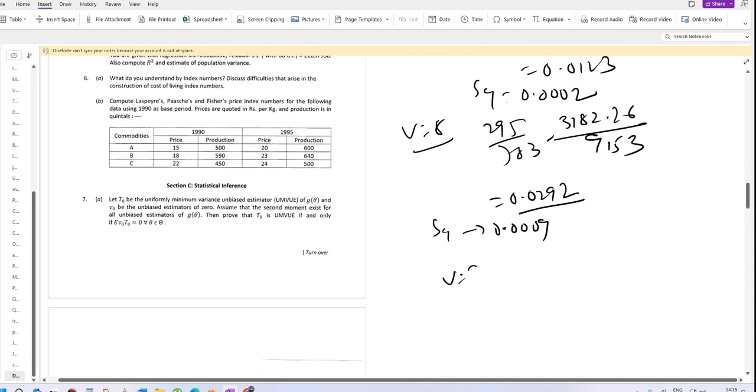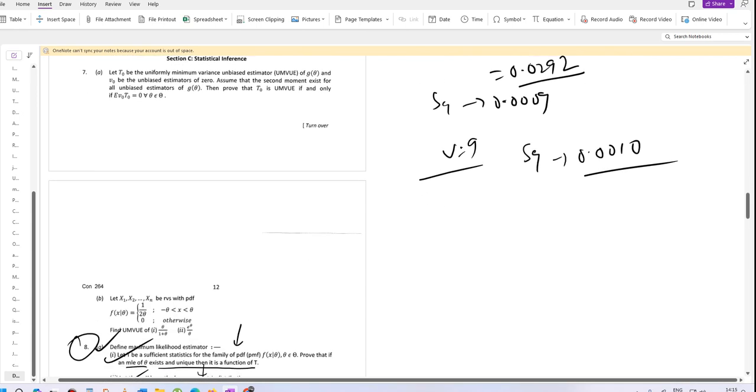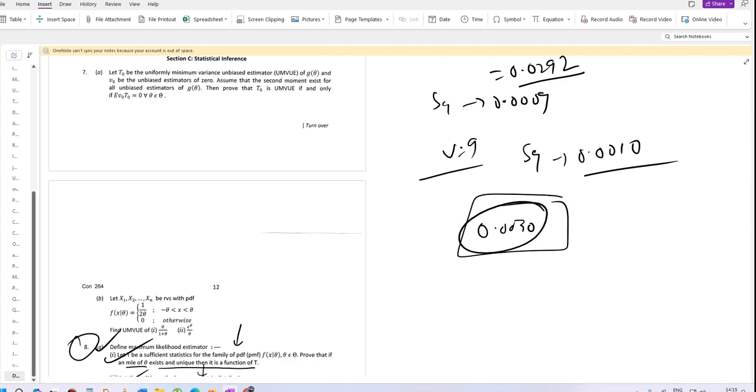The square deviation for village 9 is 0.0010. The sum of all square deviations is 0.0030. The variance is 1 by 4 times 0.0030 divided by 3372 square, which equals 0.0000065. This is the ratio estimate and the variance.